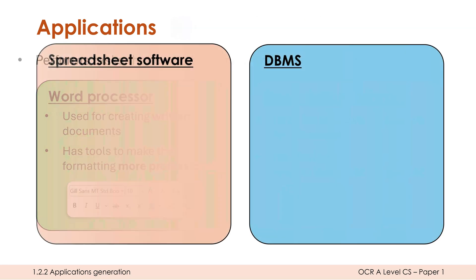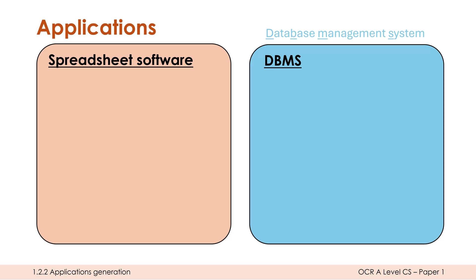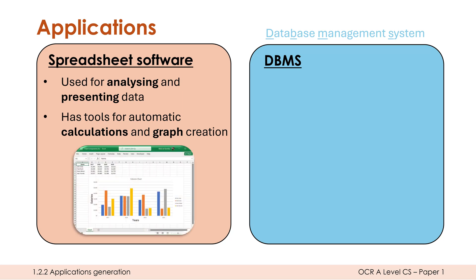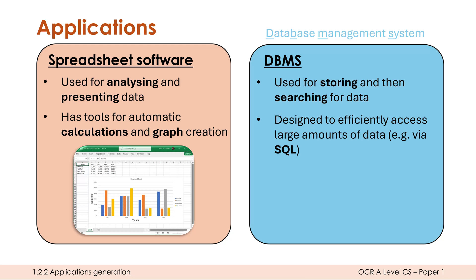People often mix up spreadsheet software and database software. The proper term for database software is DBMS — short for database management system — a program which lets us add to and access a database, which is itself just a big collection of tables. Spreadsheet software is more for analyzing and presenting data through calculations, formulas, and graphs. Whereas a database is there to store data long term and search for it, and the DBMS provides tools to efficiently access potentially huge amounts of data — we might use SQL queries to interact with it via the DBMS.